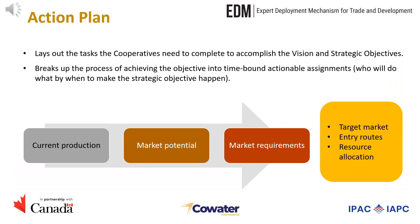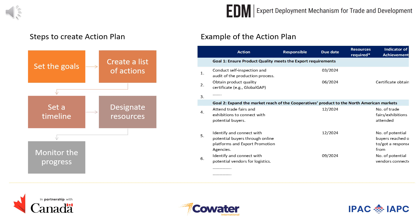Let us now look at the action plan. An action plan lays out the tasks that cooperatives need to complete to accomplish the vision and strategic objective. It also breaks up the process of achieving the objective into time-bound actionable assignments. The strategic choices at this stage, based on the assessment conducted previously on current production, market potential and market requirements, may cover which countries to enter, the routes to entry, and where to allocate the cooperative's resources. An action plan can be created following five steps: set the goals, create a list of actions, set a timeline, designate resources, and monitor the progress. The example on the slide consists of the overall goal, the actions required, clear assignment of responsibilities, a clear timeline, resources required for each action, and an indicator showing the level of achievement.